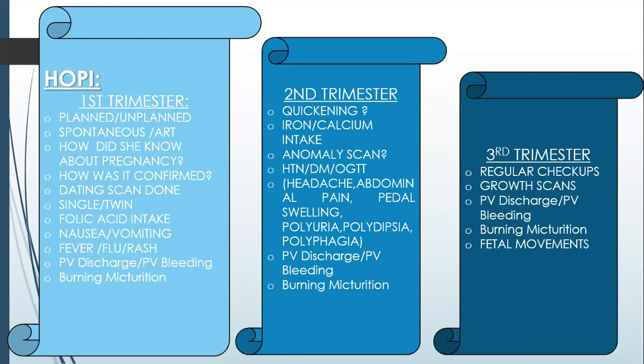Ask the patient about nausea and vomiting — excessive vomiting to rule out hyperemesis gravidarum. Ask about fever, flu, and rash to rule out TORCH infections. Then inquire about per vaginal discharge, per vaginal bleeding, or burning micturition to rule out urinary tract infections, which are most common in pregnancy.